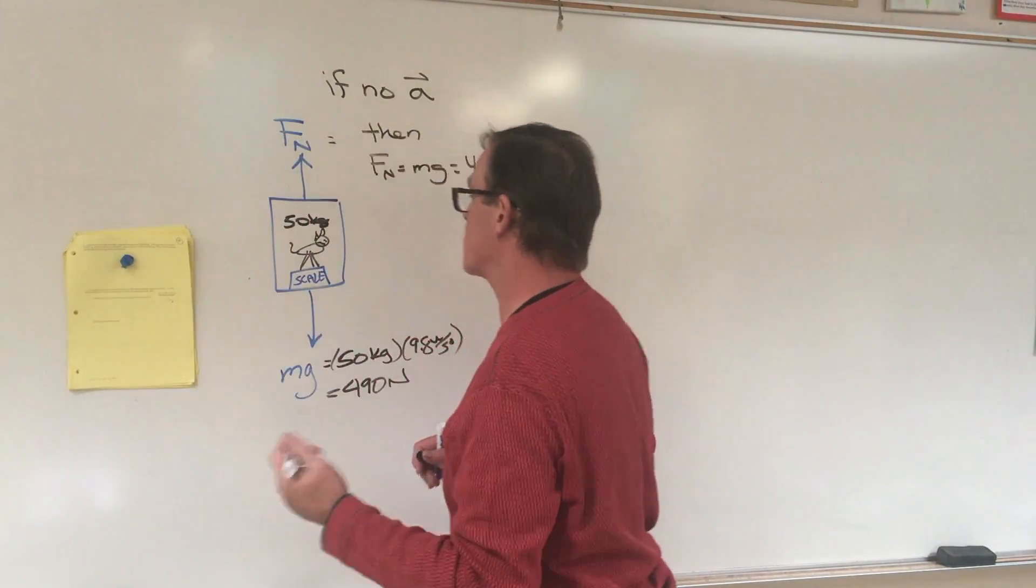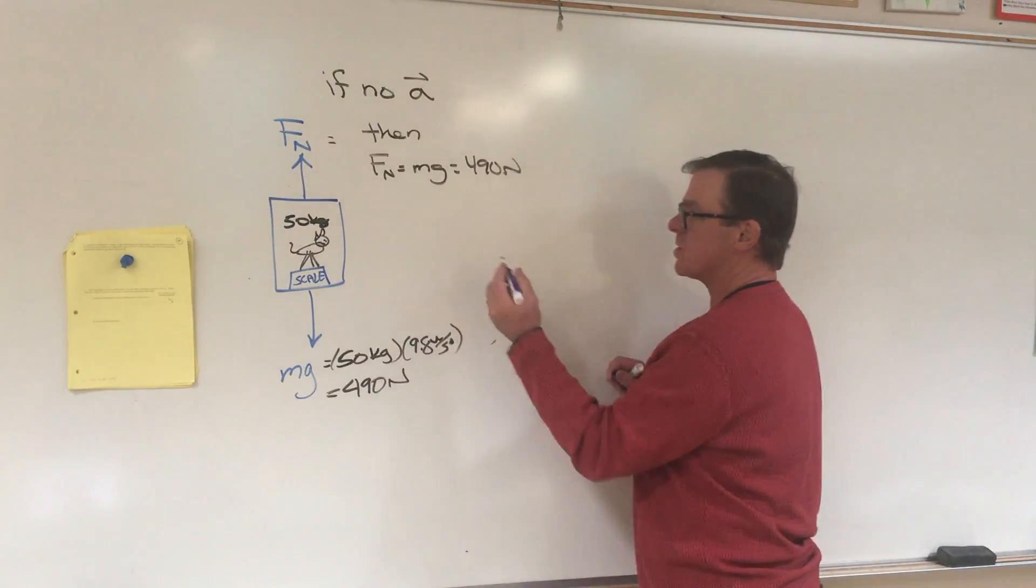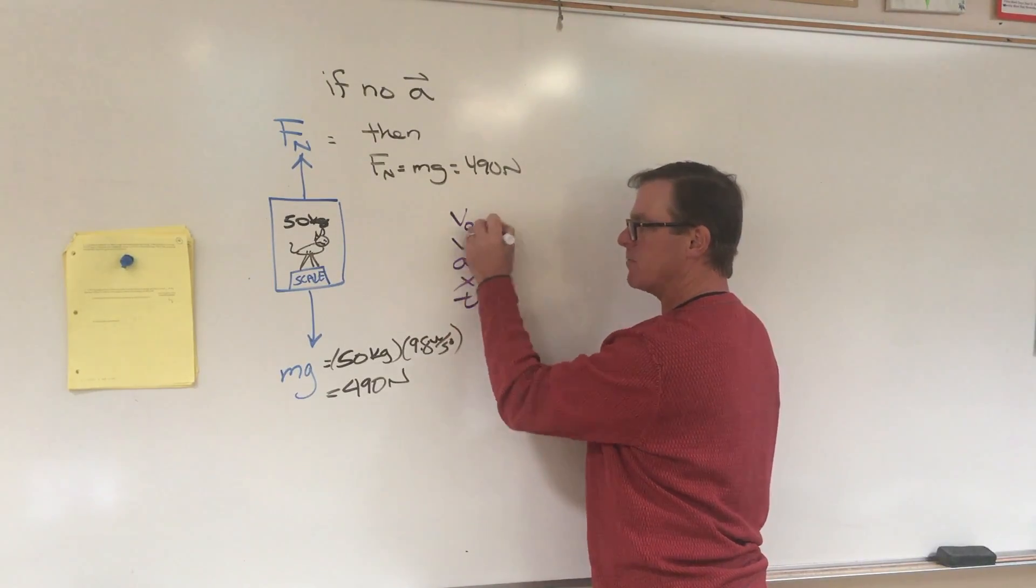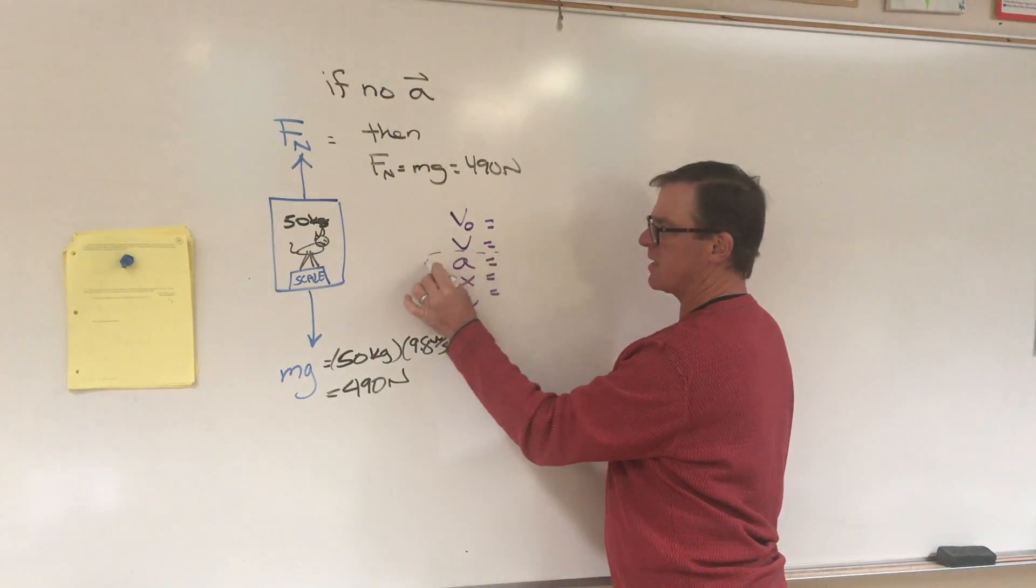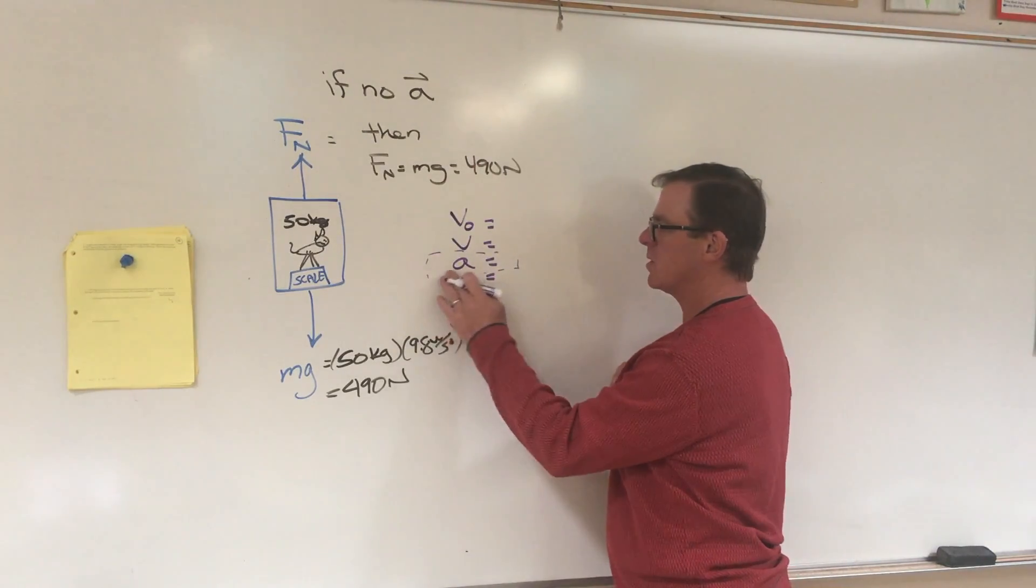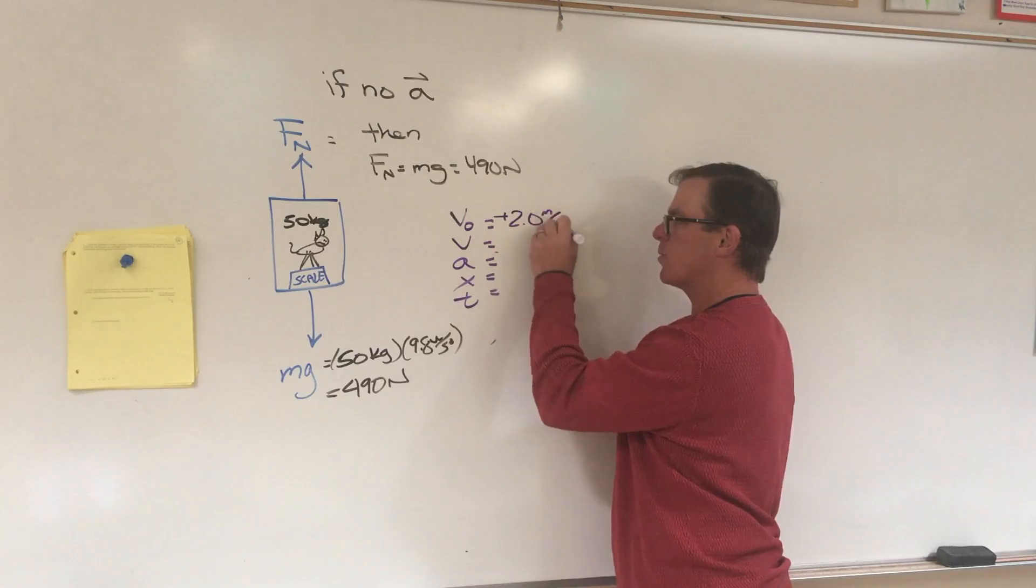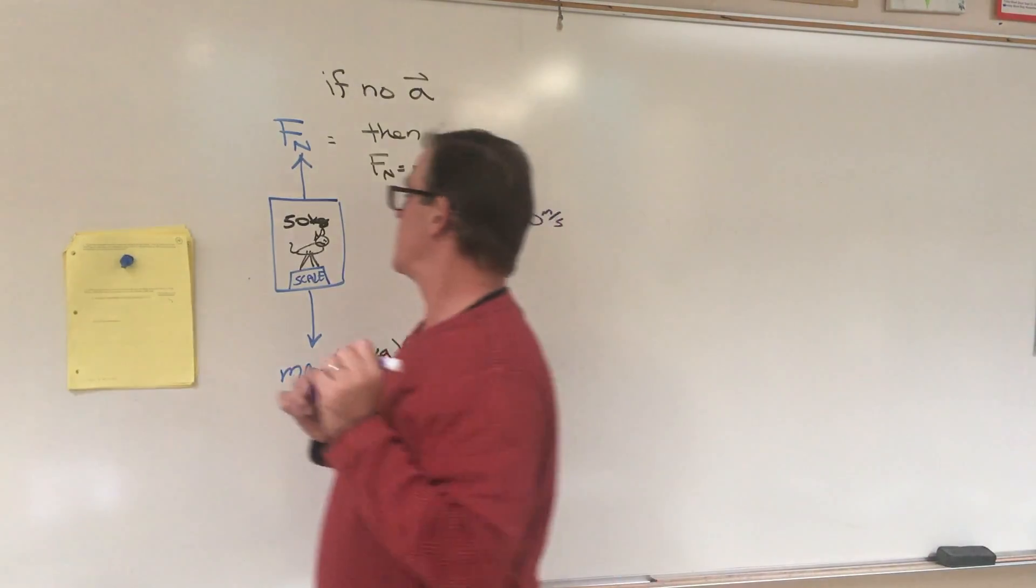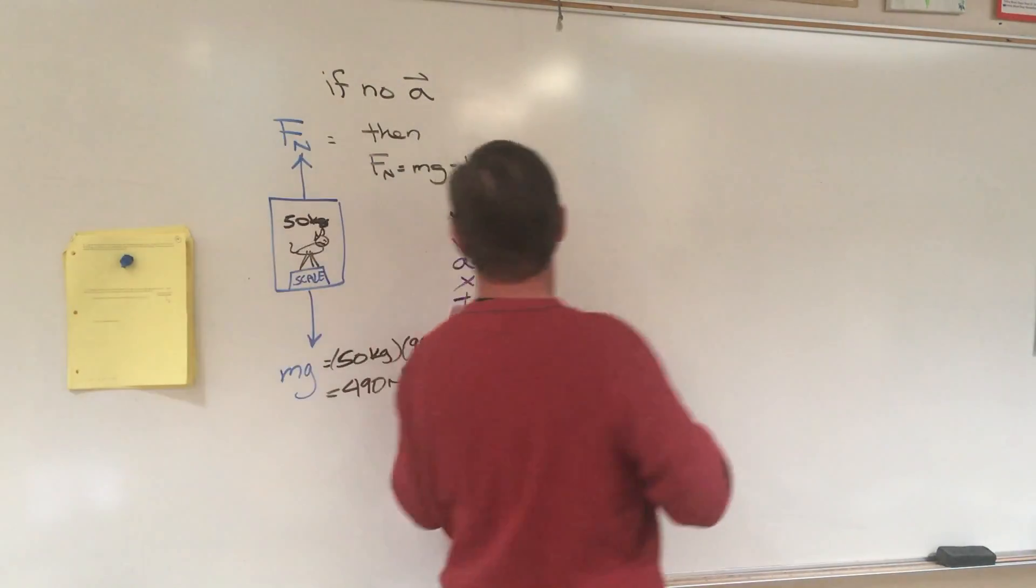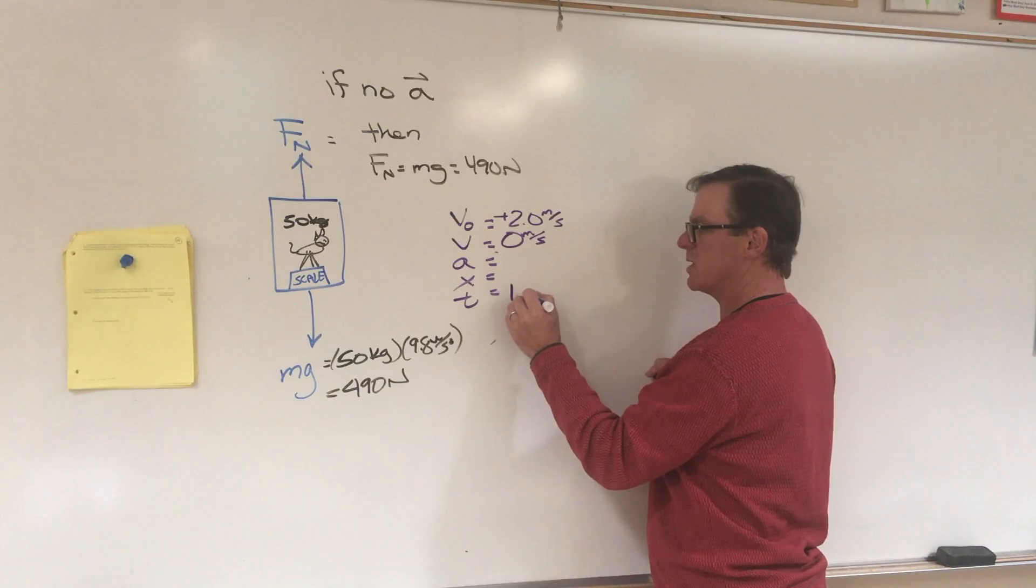Now they tell us that the dog is going upward at 2 meters per second at first. So I'm going to make an old school list of a VAXTA list, and you may wonder why I'm doing that, but I need to determine if there's an acceleration. It says initially the dog is going upward at 2 meters per second, and then it says that the elevator comes to rest in 1 second. So the final velocity of the elevator is 0, and time is 1 second.